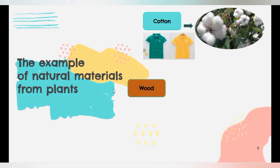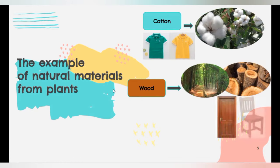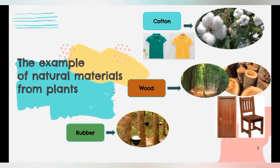Next, wood. We can get wood from tree. It can be used to make door and chair. Next, rubber. We can get rubber from rubber tree. It can be used to make balloons and eraser.